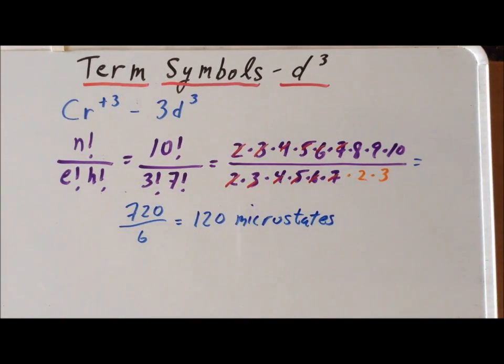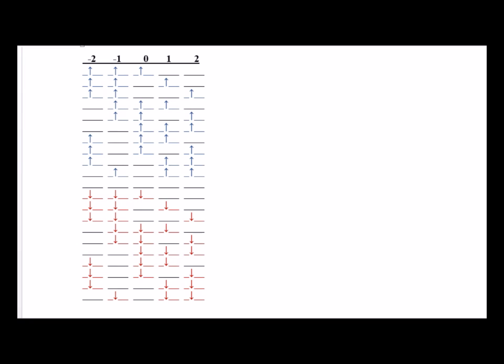Our next step is to derive all 120 microstates, and then we will use the information from the microstates to generate the term symbols for the D3 configuration. In the succeeding frames, we are going to show all 120 microstates for the D3 configuration. Note that across the top, in bold numbers from minus 2 to positive 2, we have the individual M sub L values for the individual orbitals. Each of the 5 horizontal dashes along one line corresponds to one of the 5 D orbitals. The blue colored arrows represent an up electron and the red colored arrows represent a down electron.